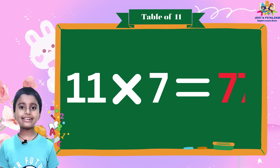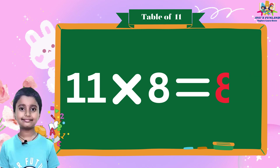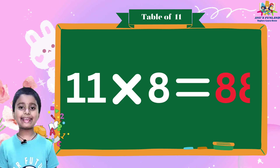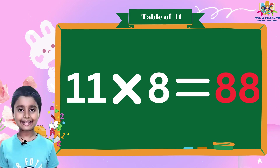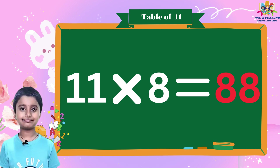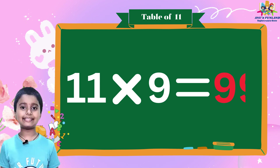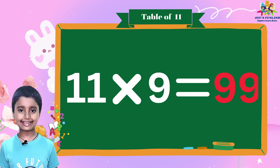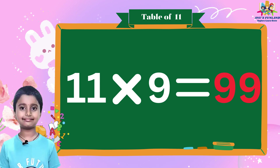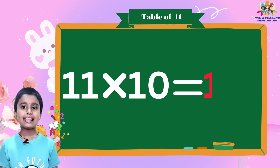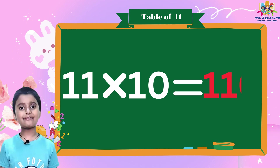11 times 7 is 77, 11 times 8 is 88, 11 times 9 is 99, 11 times 10 is 110.